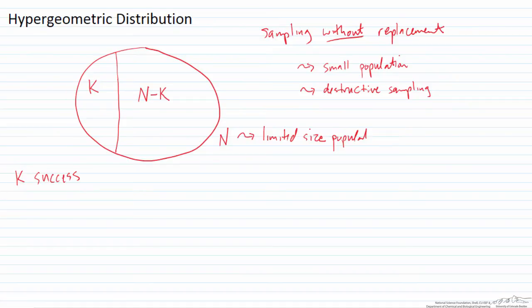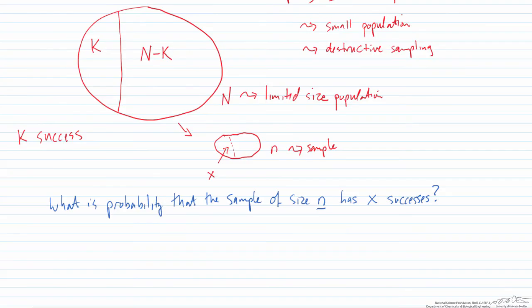We take a sample from this population, assuming it's well mixed, and that sample has little n items. The number of successes in that sample we denote by little x. This is used to answer questions like: what is the probability that a sample of size n has x successes?